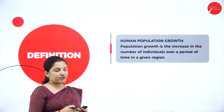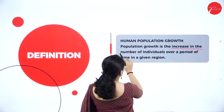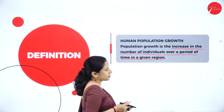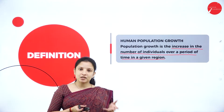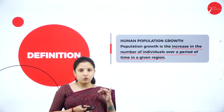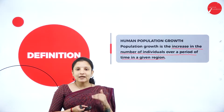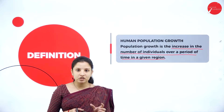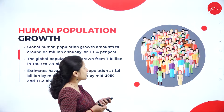So what is human population growth? Population growth is the increase in the number of individuals over a period of time in a given region. For example, every year a census is conducted of a particular region — what the population number was one year, and how much it has increased the next year. Measuring this increase in a given period of time and region is called population growth.